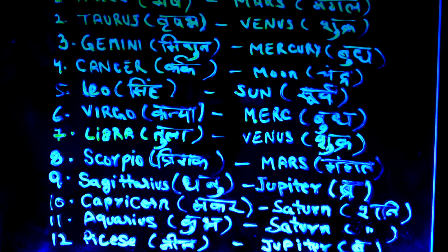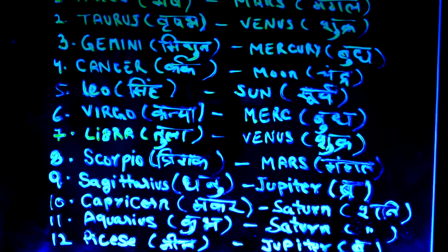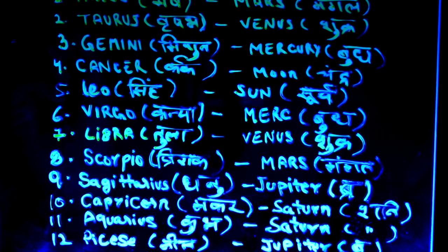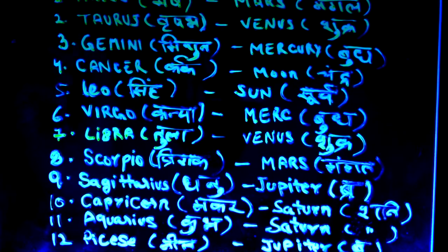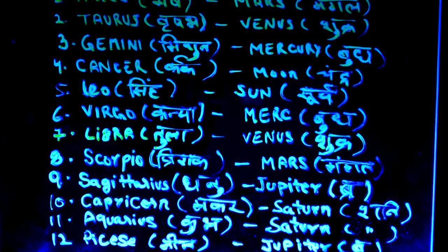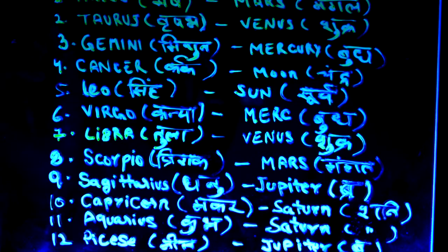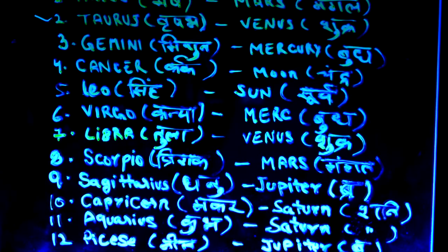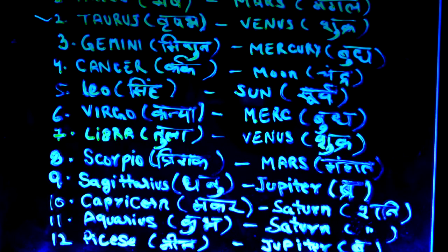The first zodiac sign is Aries, and the Hindi name is Mesh. The lord is Mars, that is Mangal. The second is Taurus, in Hindi Vrish, and the lord is Venus or Shukra.